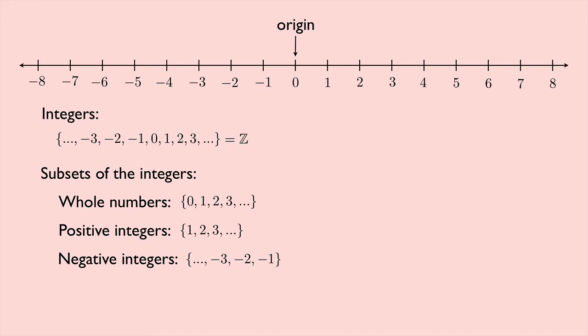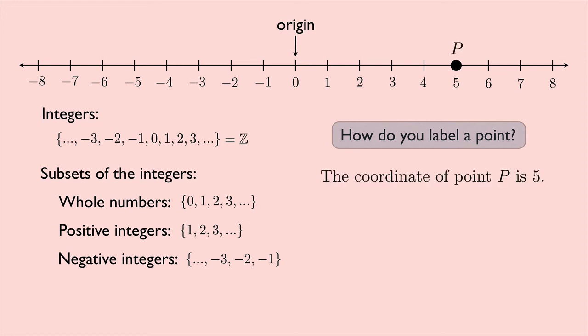and so on. How do you label a point on a number line? Well, it's pretty easy. Suppose we have this point right here. I'll call it point P. The coordinate of point P is 5.